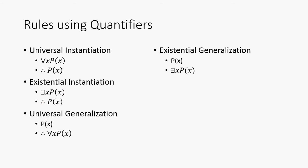Then there's also some rules using quantifiers. There's universal instantiation, which is where we say for all X some proposition or some predicate P of X is true, therefore P of X. There's also existential instantiation. There exists an X such that P of X, therefore P of X.